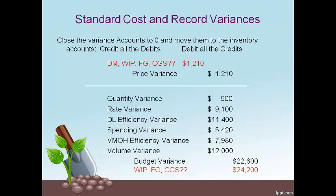The other variances only come about as products are being made. As such, these variances are not allocated to the direct materials account, because the cost of direct materials sitting in the direct materials warehouse occurs before products are made. The net of the other variances, which is $24,200, must be allocated only to work in process, finished goods, and cost of goods sold — not to direct materials. The same question arises: how much should be allocated to each of the three accounts?